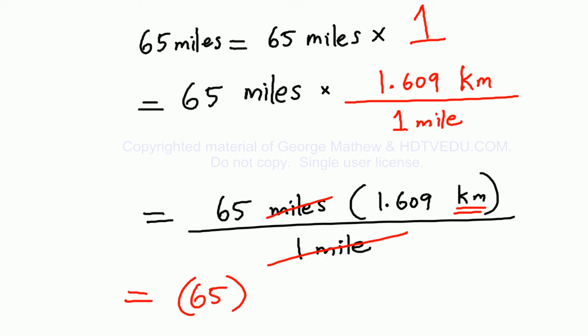So what do we get? 65 times 1.609. What is 65 times 1.609? It is 104.585.